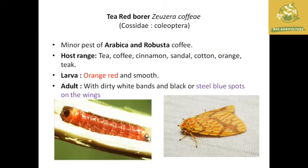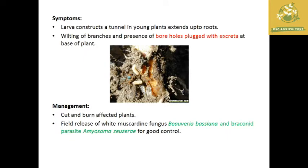The next pest is the tea red borer, with the scientific name Zeuzera coffeae. It is a minor pest also found in Arabica and Robusta coffee and has a wide host range including tea, coffee, cinnamon, sandal, cotton, and orange. The larva is orange-red and smooth, giving the pest its name. The adult has dirty white bands with black or steel-blue spots on the wings. The symptom of damage: larvae construct tunnels into young plants extending up to roots, causing wilting of branches, bore holes with excreta visible at the base of the plant.